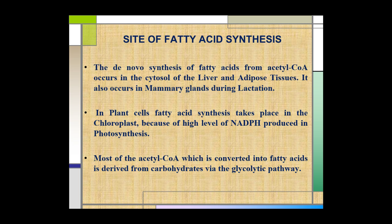Now, where does fatty acid synthesis occur? The de novo synthesis of fatty acids from acetyl coenzyme A occurs in the cytosol of the liver and adipose tissue in mammals. It also occurs in mammary glands during lactation. In plant cells, fatty acid synthesis takes place in the chloroplast, because of the high levels of NADPH produced during photosynthesis. Most of the acetyl coenzyme A converted into fatty acids is derived from carbohydrates via the glycolytic pathway.